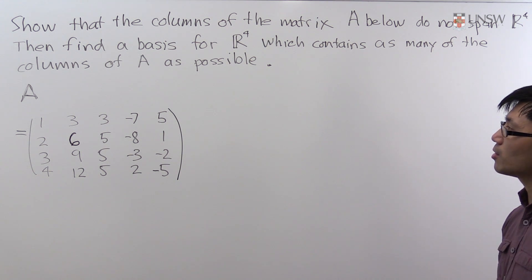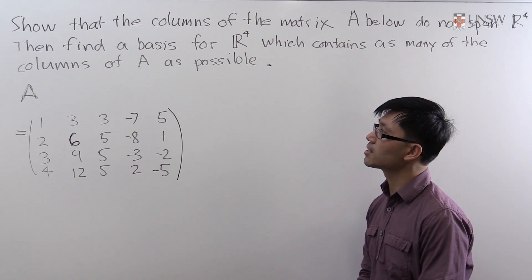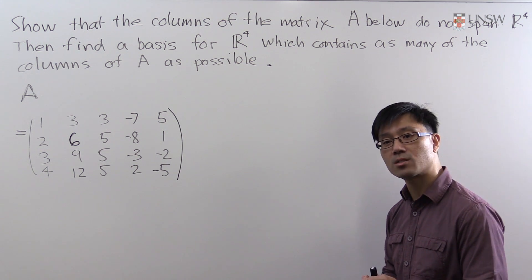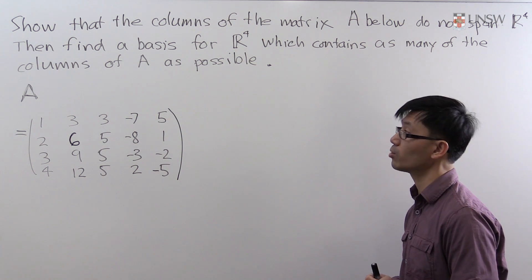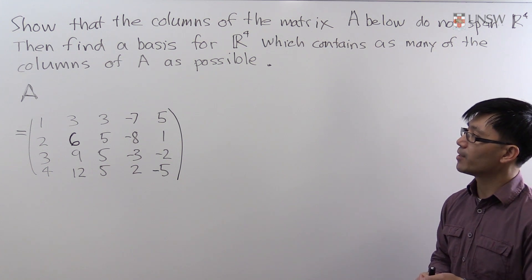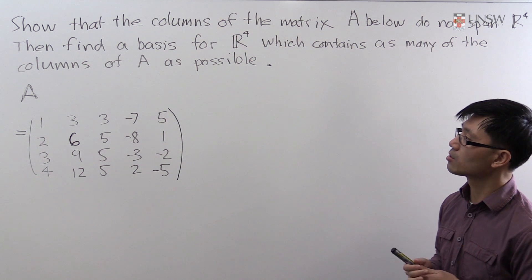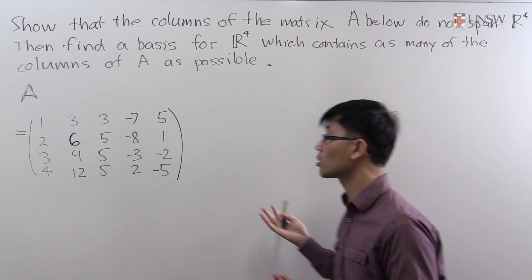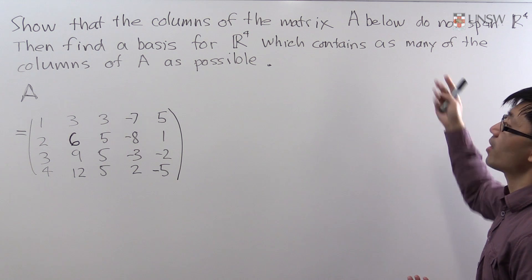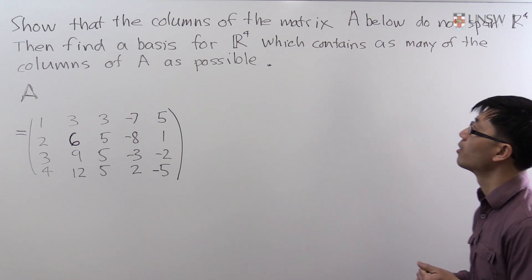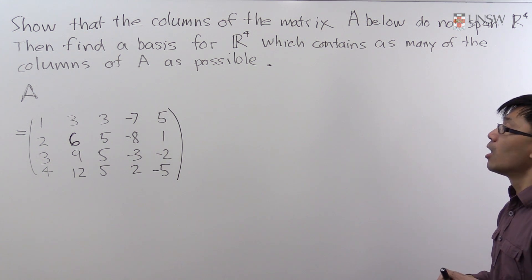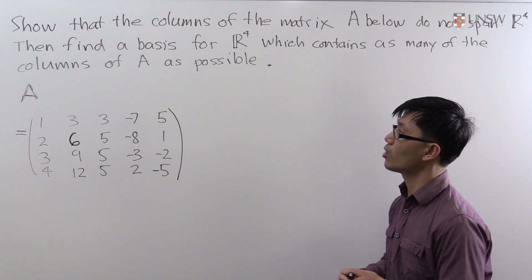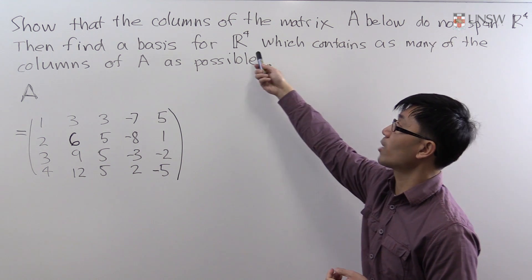Before we start, there are just some things to note. Even though there are two parts to this question, you can actually do both with just one Gaussian elimination — don't do two separate ones, that will save some time. The basic approach is: firstly, we'll omit some columns of A to find a basis for the column space of A, which is just the span of the columns of A. From there it will be easy to see the columns don't span R4. Once we have a basis for the column space, we'll throw in some extra standard basis vectors to extend it to a basis for R4 itself.